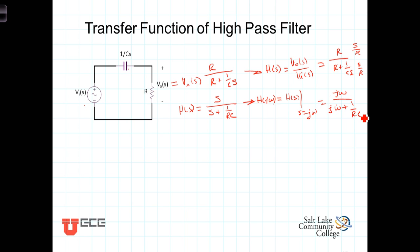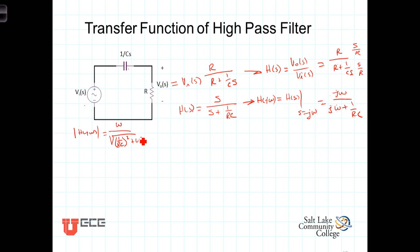We can form the magnitude of the frequency response. The magnitude of H of j omega equals the magnitude of the numerator — the numerator is pure imaginary, but its magnitude is omega — divided by the magnitude of the denominator, which is the square root of 1 over RC squared plus omega squared. The magnitude of the denominator is the square root of the real part squared plus the imaginary part squared.